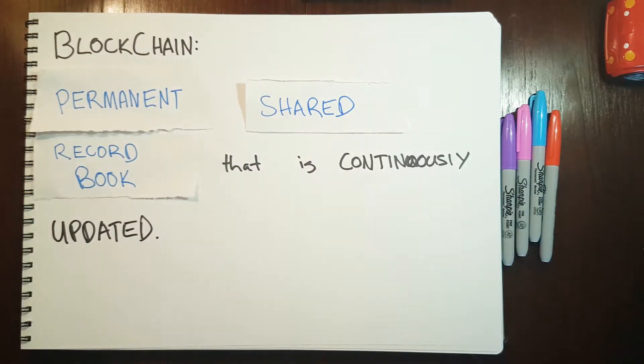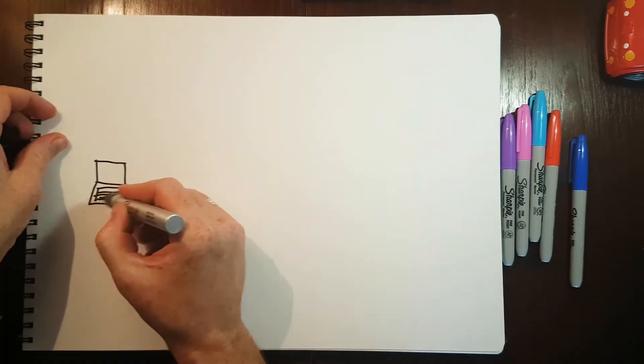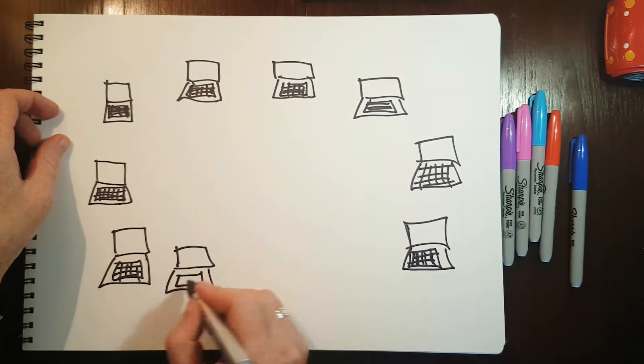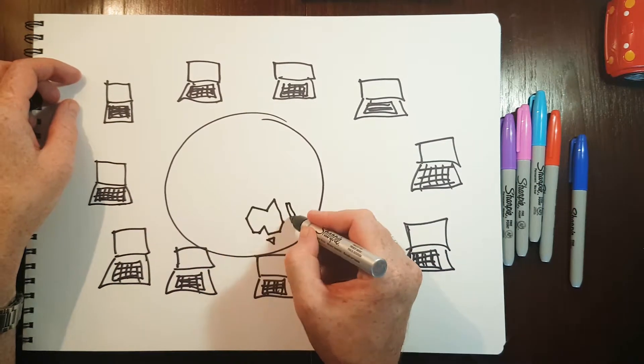So blockchain is a permanent record book that is shared. It's not one centralized copy of the book that is shared, but rather thousands of copies that are shared on computers all around the world.